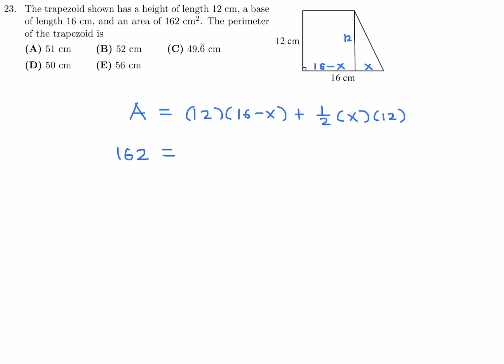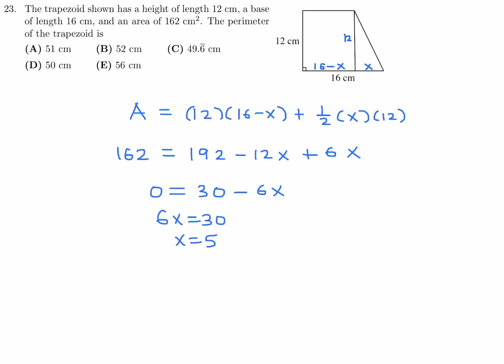Setting the area equal to 162: expanding gives 192 minus 12x plus 6x equals 162, which simplifies to 192 minus 6x equals 162, so 6x equals 30 and therefore x equals 5. Now for the perimeter: if x is 5, the triangle base is 5, and the rectangle base is 16 minus 5 equals 11, so the top of the trapezoid is also 11. For the slanted side, use the Pythagorean theorem: 12 squared plus 5 squared equals h squared.